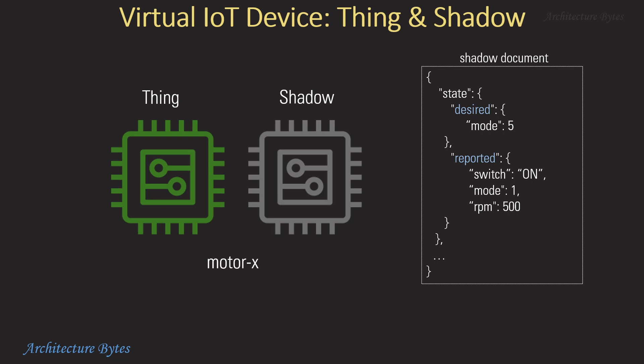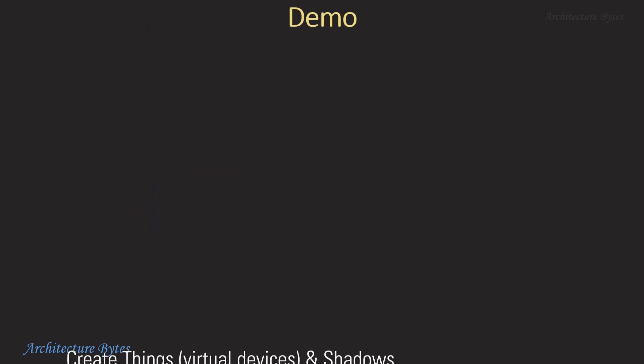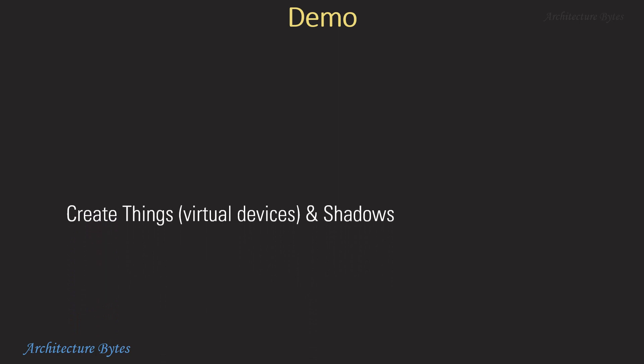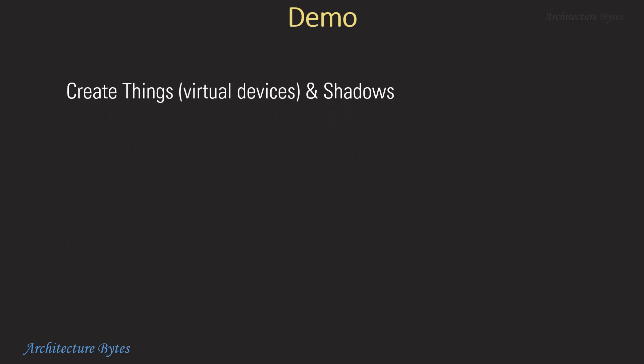When you create a virtual device or a Thing in AWS IoT, you have the option of creating a shadow along with it. The shadow object keeps the state of the IoT device — it is a JSON with the reported and desired states. Now that we understand the architecture, let us proceed with the demo.